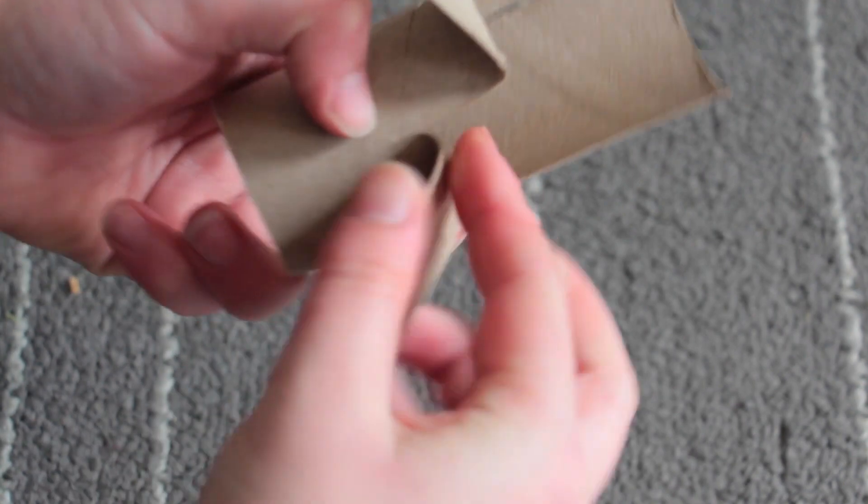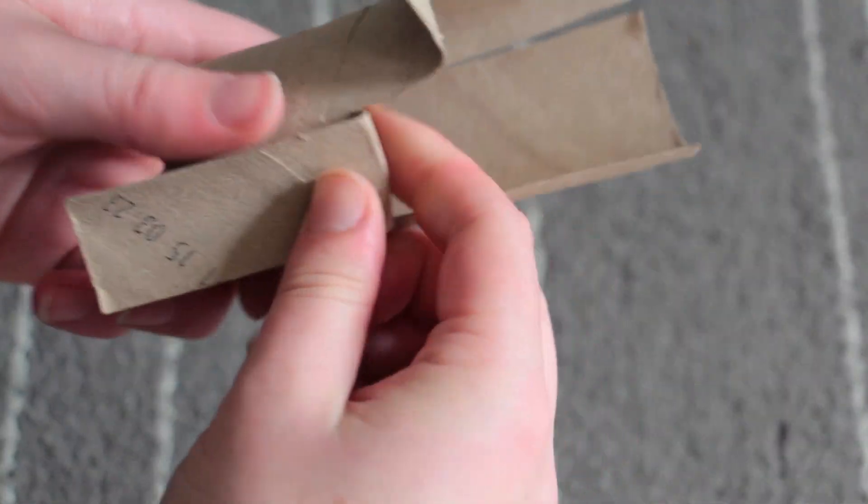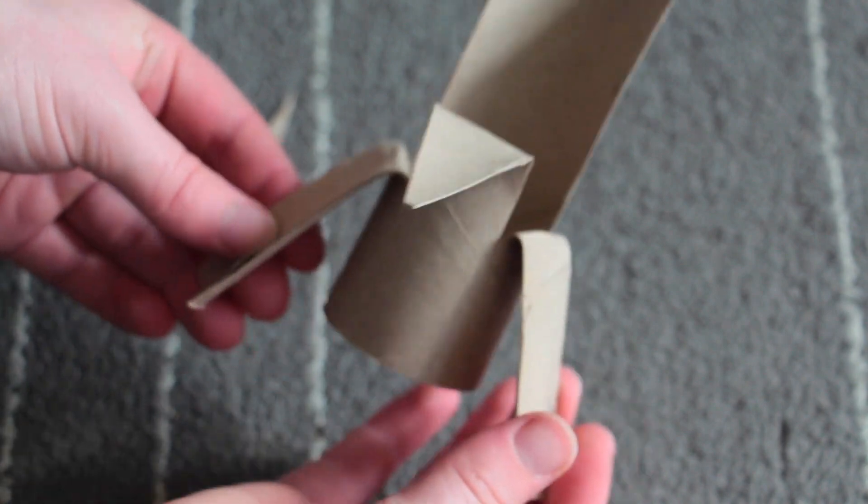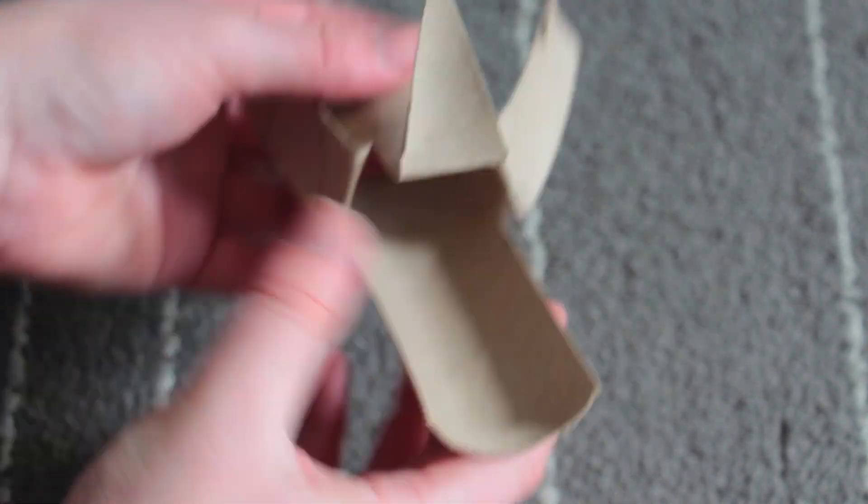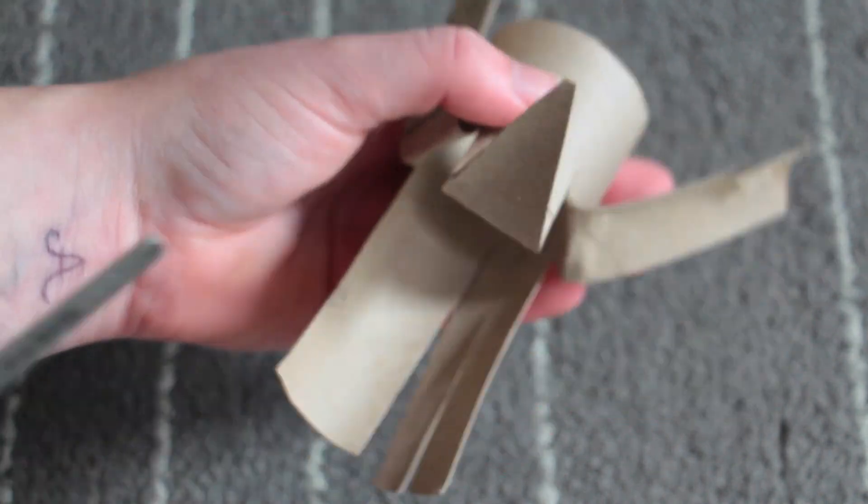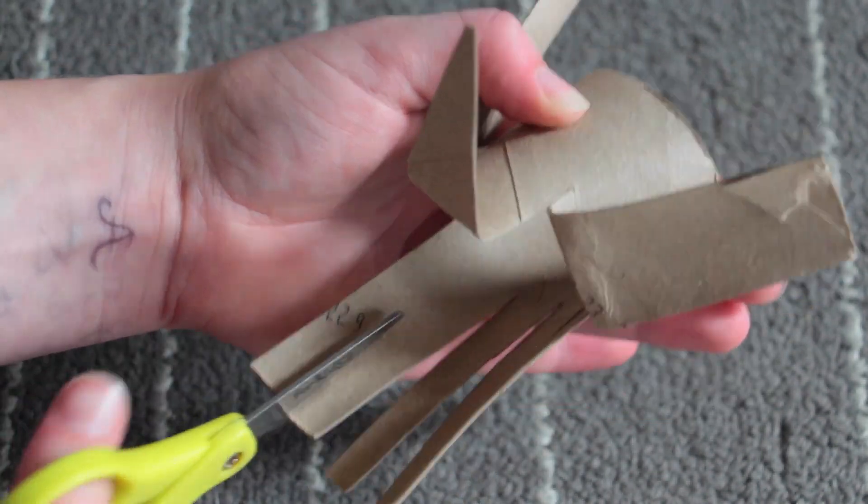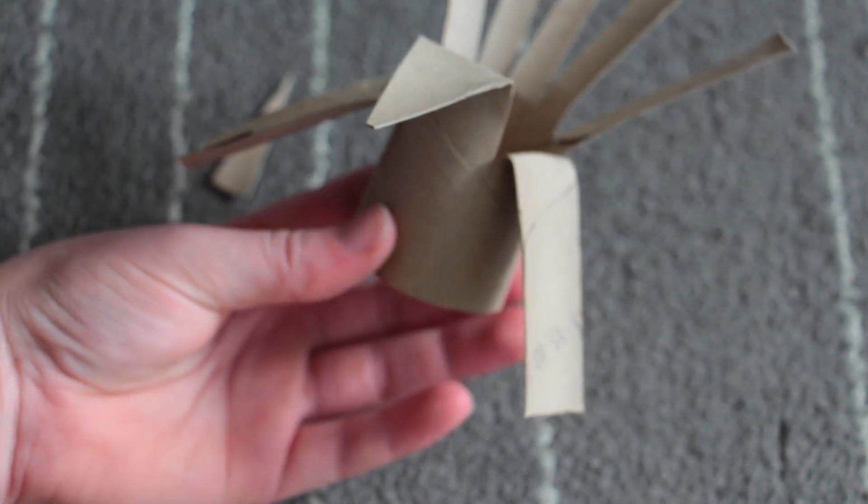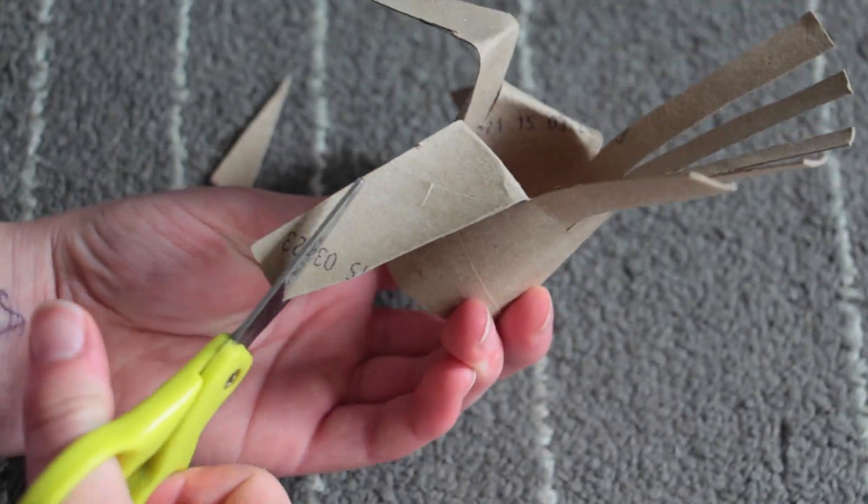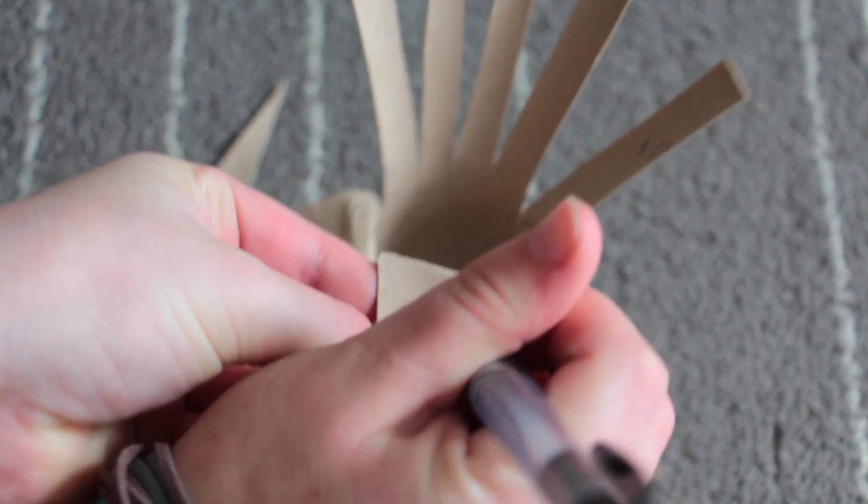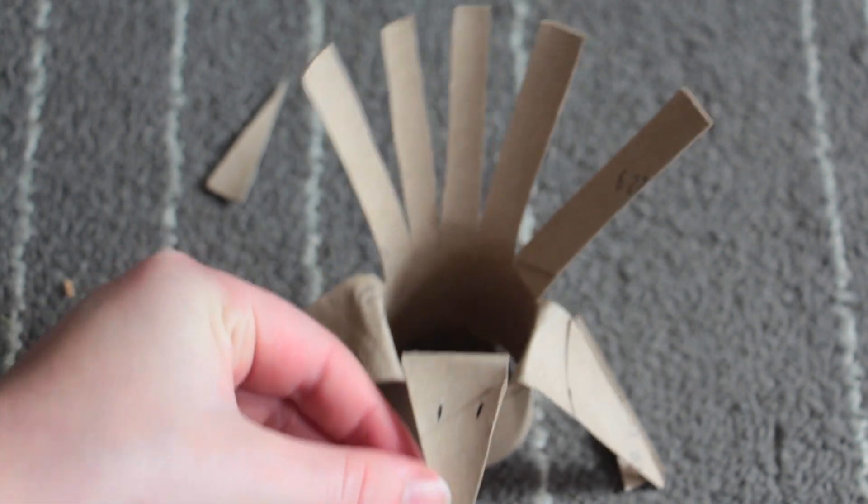You can fold the other two thirds down—these make the wings. For the back of the bird, you're going to cut it down into either fifths or sixths. Then just spray them out a little bit. The last thing I did was cut the wings to a more triangle shape and I drew on two little eyes. That's it. This was super fun and I really like the way this turned out.